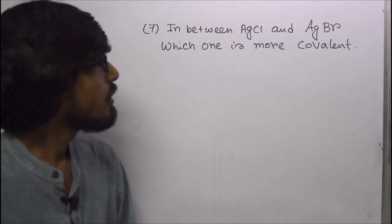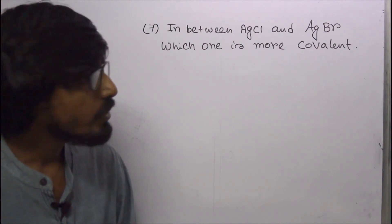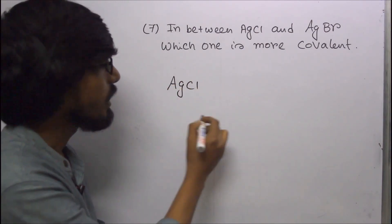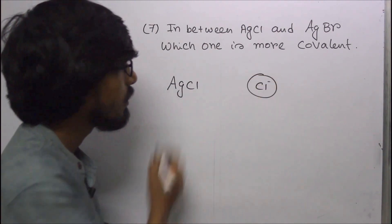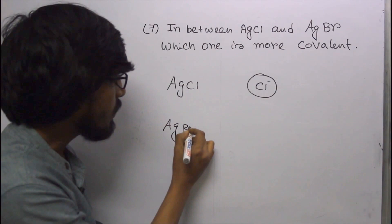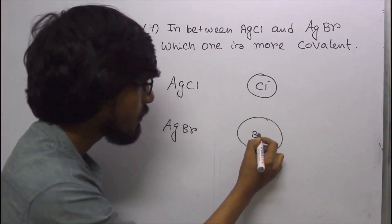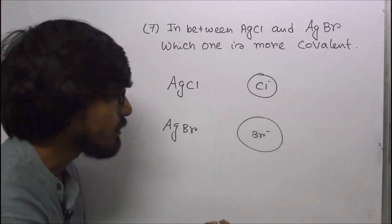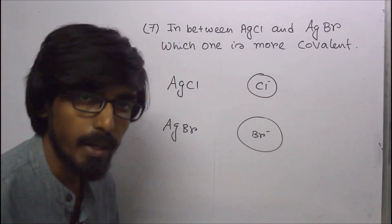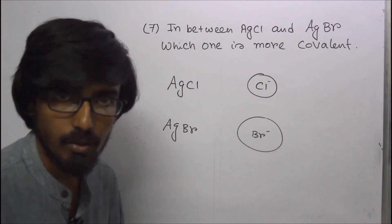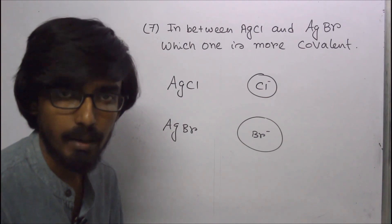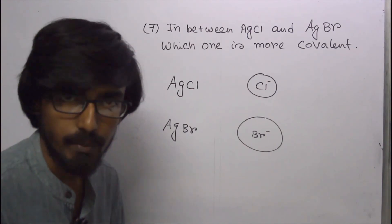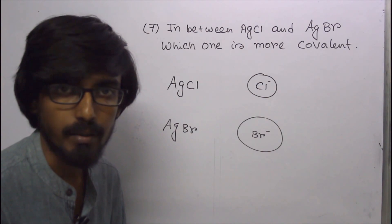Next question: between AgCl and AgBr, which is more covalent? In AgCl the anion is chloride; in AgBr the anion is bromide. The size of bromide is greater than chloride, so bromide has higher polarizability. According to Fajan's rules, the anion with higher polarizability leads to greater covalent character. Therefore, AgBr is more covalent than AgCl.